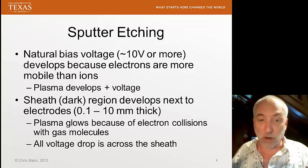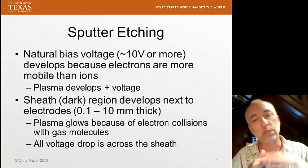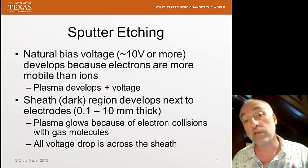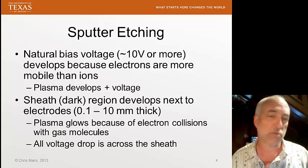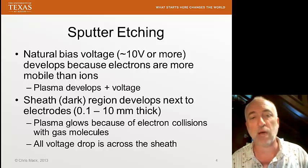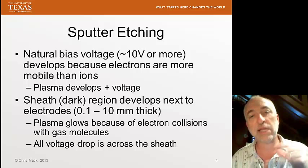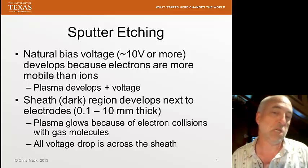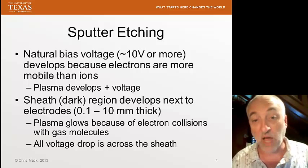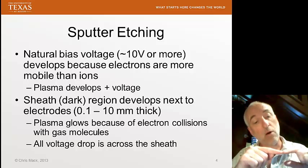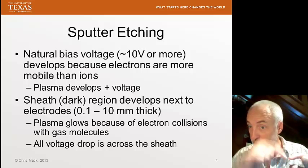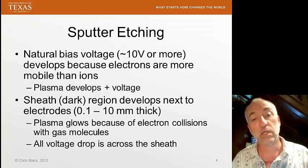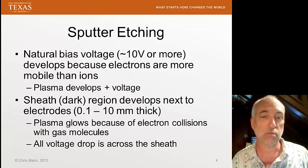The plasma itself is full of charge, so it conducts electricity very, very well — there's no voltage developed from one side of the plasma to the other. All of the voltage occurs across the sheath, the dark region, which doesn't conduct electricity well. The sheath thickness is what we have to worry about when it comes to the mean free path — typically on the order of a millimeter, ranging from as low as 0.1 to as high as 10 millimeters. Over this dark region, if we want purely vertical ions striking the wafer, we need the mean free path to be large compared to the sheath region thickness.